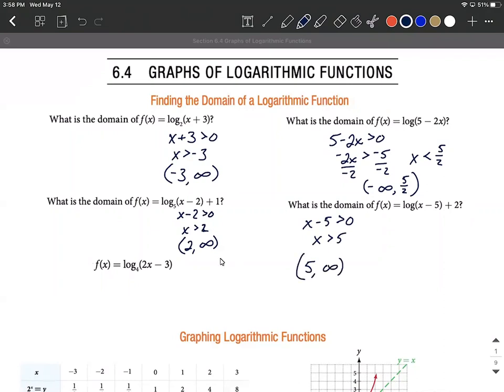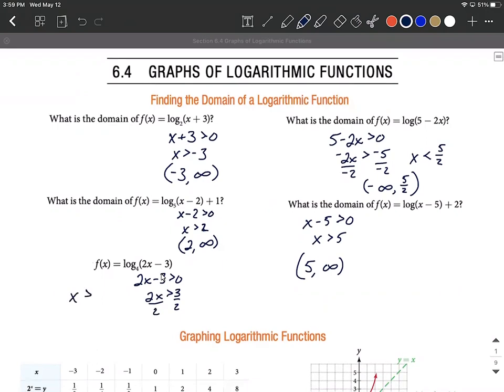And last one here, we have log base four of two x minus three. And the base doesn't really matter on these when we're looking at the domain. So two x minus three greater than zero. On this one, we're going to add the three, divide both sides by two. In interval notation, rather inequality notation, this is x is greater than three halves. In interval notation, that means three halves to infinity. Leave out the end points with open brackets.